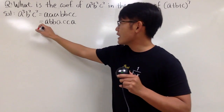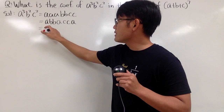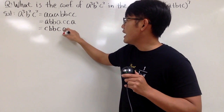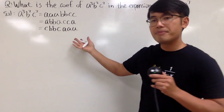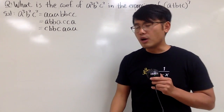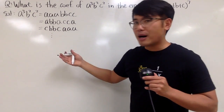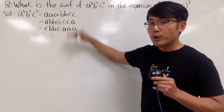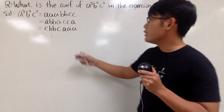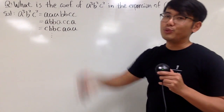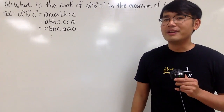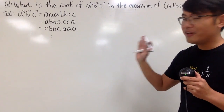But this is not the only way. I can also write it as A times B times B, then times A times C times C, then times A — this will still produce A to the third, B to the second, C to the second. I can do another one: C times B times B, then another C, then A, A, A. So you just have to think about how many ways we can arrange three A's, two B's, and two C's.